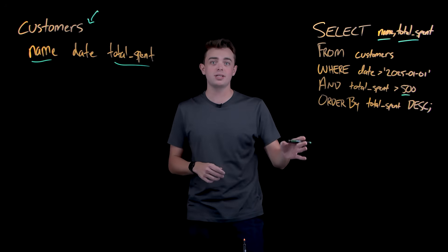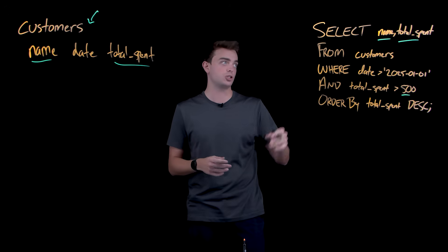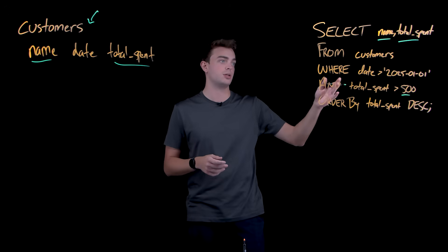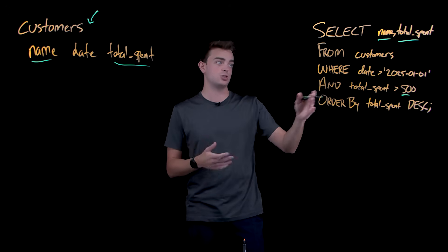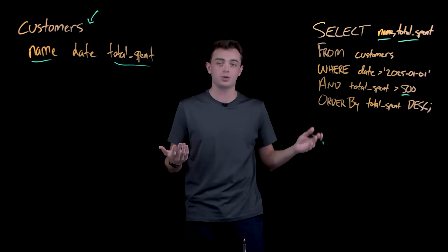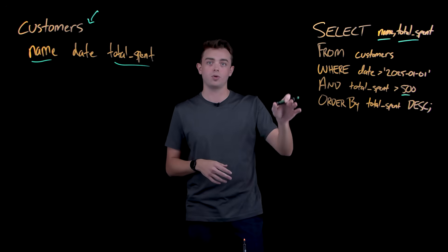And finally, order by the total spent descending — so in descending order with the highest amount first. Every piece has to be exactly right. You can't say 'show me name and total spent' or 'since January 1st, 2025' instead of this specific format.